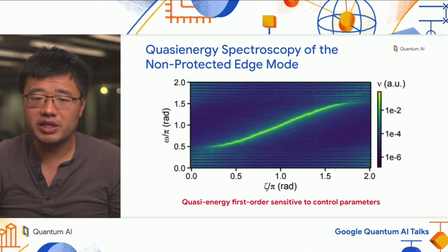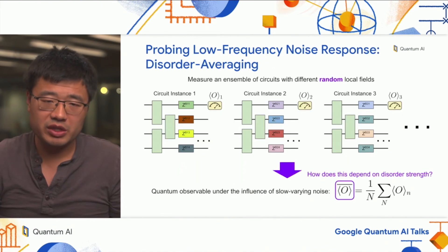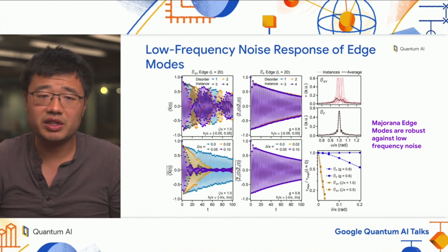We go and try an experiment to compare the behavior of the two different edge modes in terms of response to low frequency noise. This is done by a disorder averaging experiment where we change the random Z field and create an ensemble of quantum circuits, measure their observables and average them out. This mimics the effect of quasi static noise.